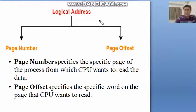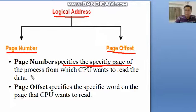In continuation of these videos, when CPU generates logical address, when we use the paging scheme to implement the logical address, we have two parts, two sections to divide them. First one is page number and second one is page offset. Page number specifies the specific page of the process from which CPU wants to read the data.